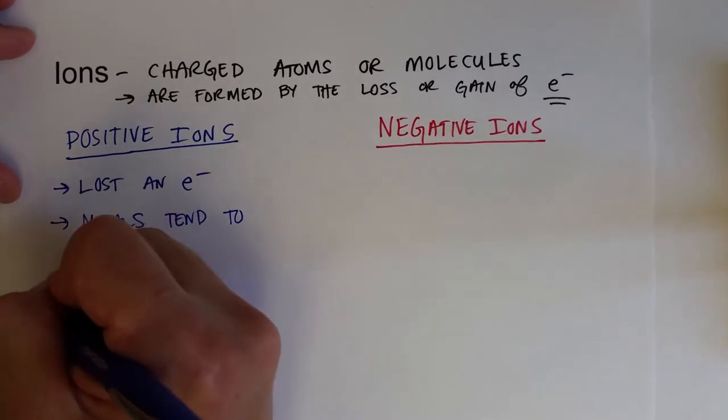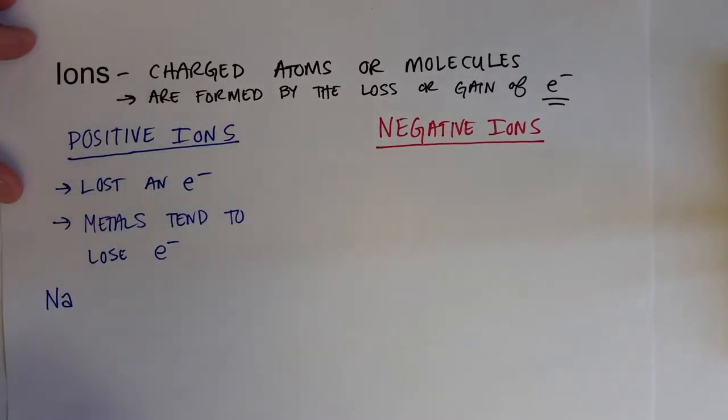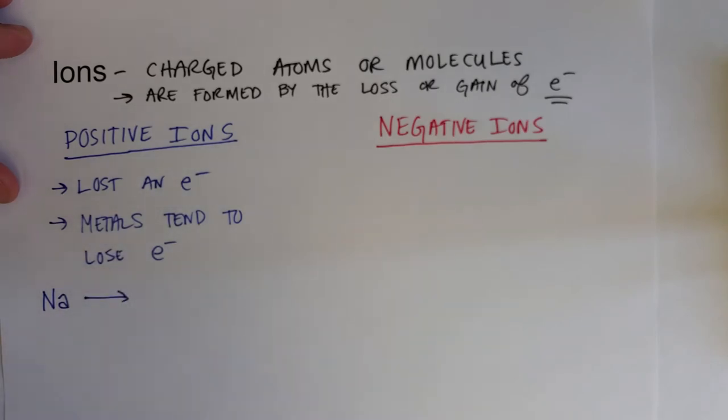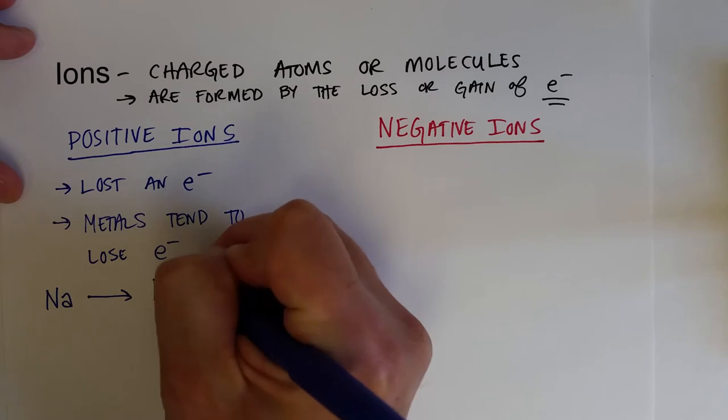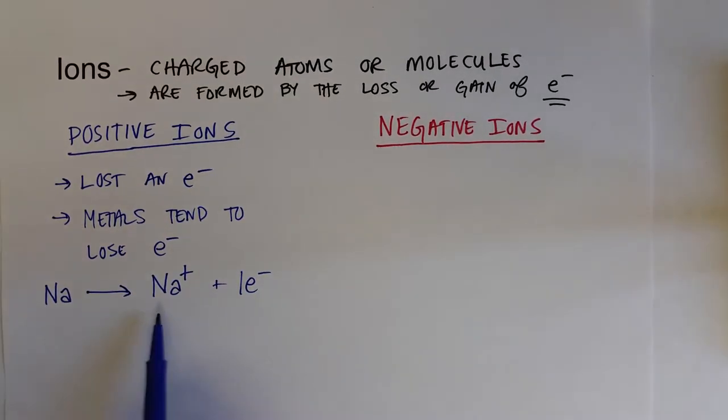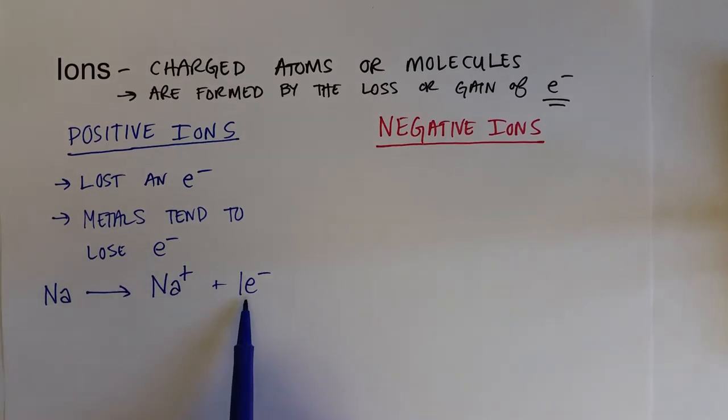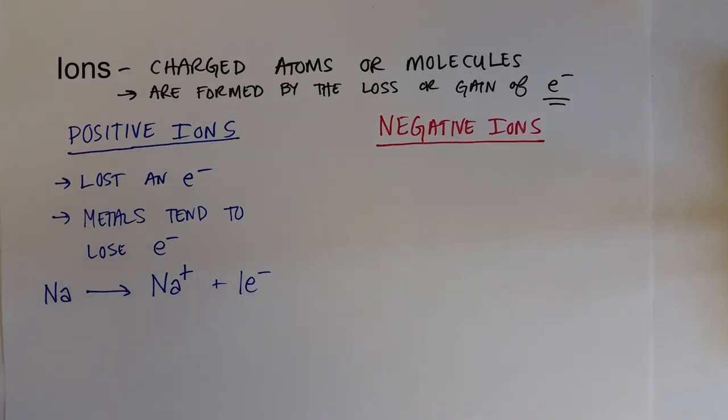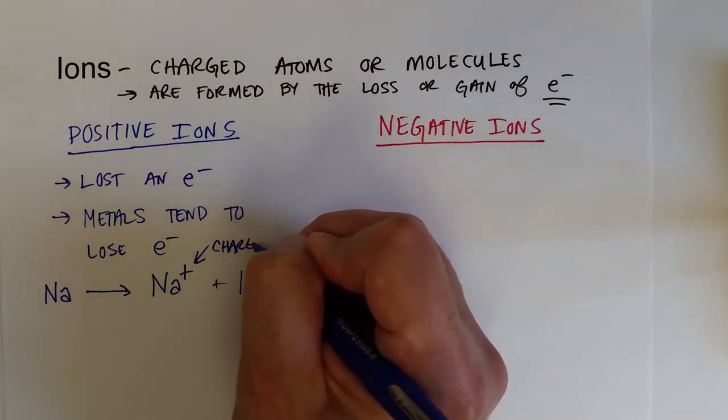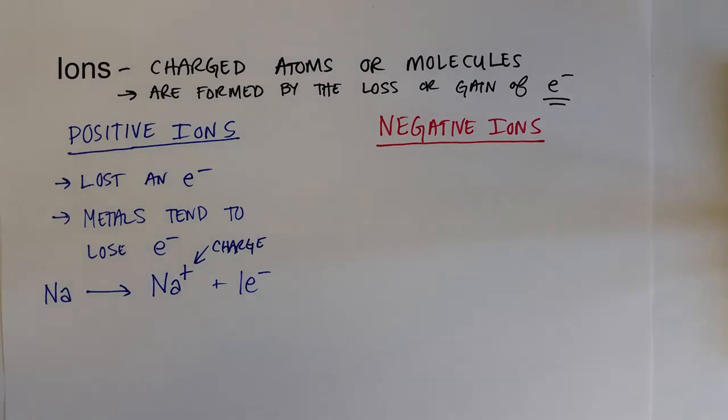For instance, sodium. The sodium that we need in our diet is not the sodium atom, the neutral atom. That's very reactive metal. What we need is the sodium ion. And so it would lose an electron to form that. So sodium neutral atom loses one electron and forms the sodium cation. And we always show the charge on the top right superscript. If it's just a plus one charge, you really don't have to show the number one. You can just use a plus.